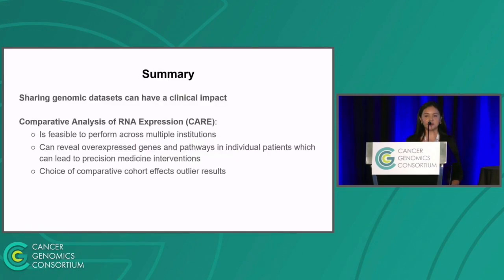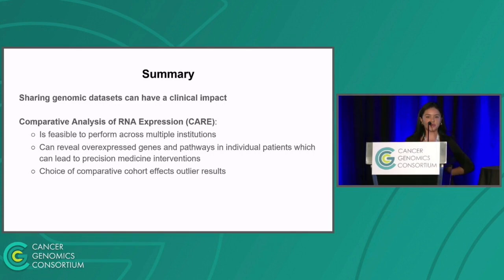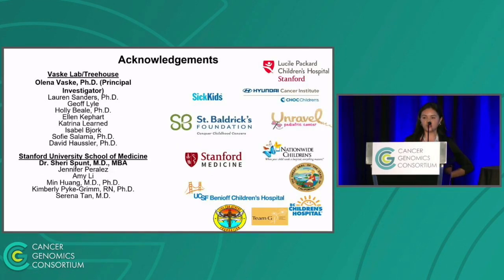To summarize: sharing genomic data sets can have a clinical impact — we don't have a medical center at Santa Cruz, so we rely on building our compendia by gathering lots of public RNA sequencing data sets, and it's really important for our work. Comparative analysis of RNA expression is feasible across multiple institutions. CARE was able to lead to precision medicine interventions, and choice of comparative cohort does matter and can impact your results. I want to acknowledge all of the people who allowed this study to be possible, especially Dr. Vasquez and Dr. Spunt who led the efforts, as well as the patients and families who participated. Thank you.